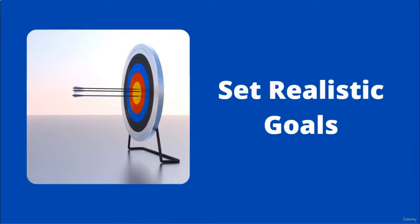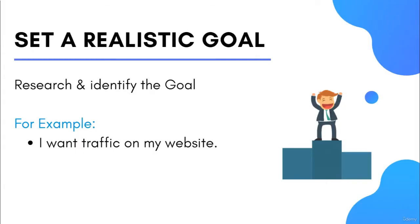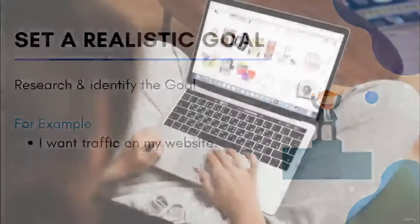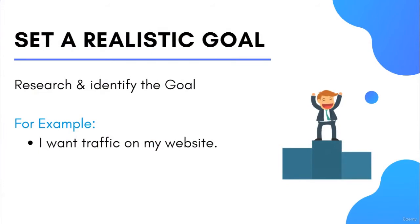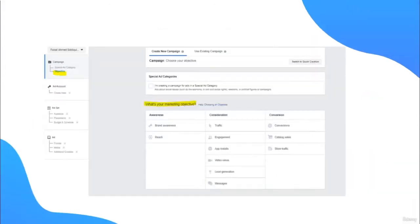Setting a realistic goal is connected with selecting the right marketing objective in Facebook Ads. If you set a wrong goal, you will never get the best results. For example, if your goal is to send maximum users to your website, you have to run your campaign on the website clicks objective. When you initiate a campaign through Ads Manager, the second option is setting your marketing objective — select the most relevant one to achieve optimal results.